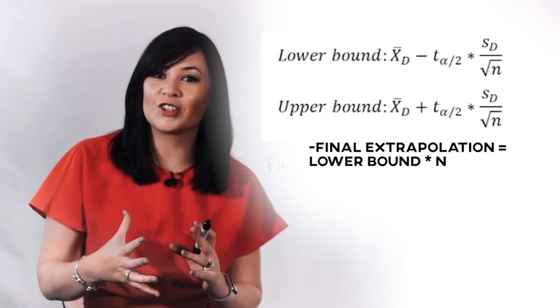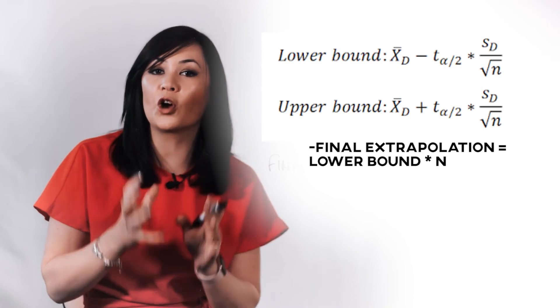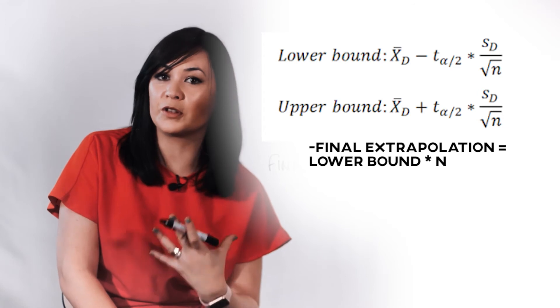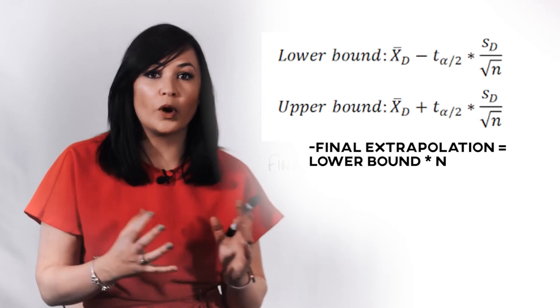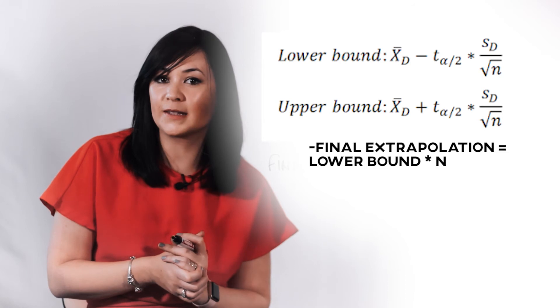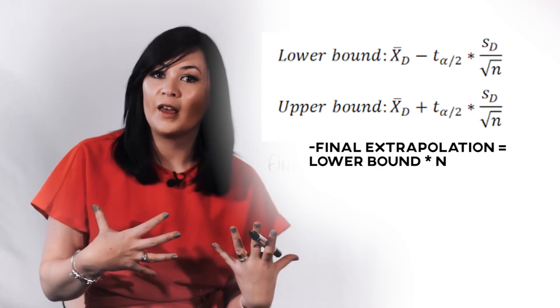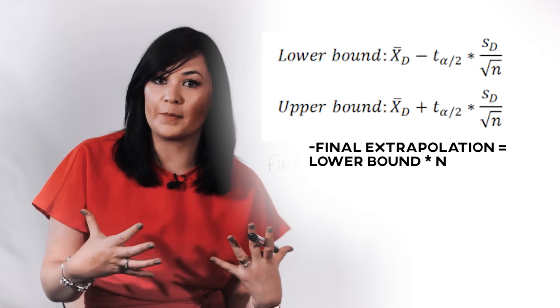The extrapolation begins by computing a confidence interval on average overpayments observed in the sample. This is the standard formula for a confidence interval when using simple random sampling, which is the simplest possible case. In most auditing applications, we typically care only about the lower bound of the confidence interval. This is done so that the outcome is as benevolent as possible to the audited party. Once the lower bound of the average overpayment per claim has been determined, we multiply this value by the total amount of claims in the universe. This will be the final extrapolated amount.